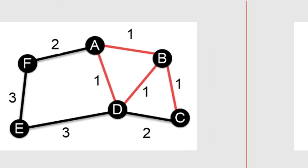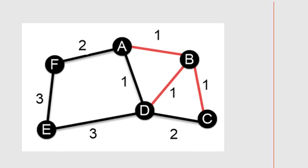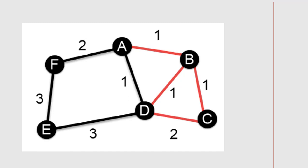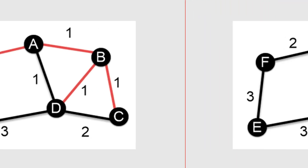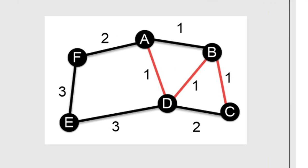Back to the left graph — I still had one edge of weight one left, but selecting it would form a circuit, so I had to skip it. Moving to weight two, I thought about selecting CD but that would also create a circuit, so I selected AF, the other edge of weight two. For the right graph, similarly I couldn't select the remaining weight-one edge without creating a circuit, and I couldn't select CD either, so I also had to select AF to avoid making a circuit.